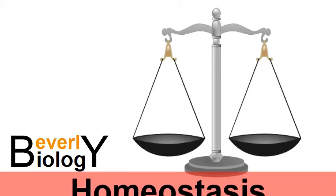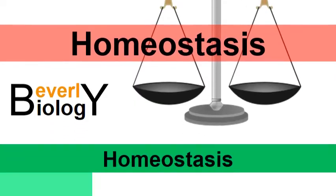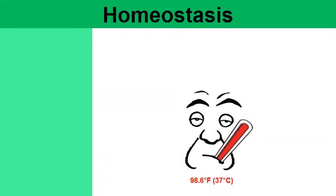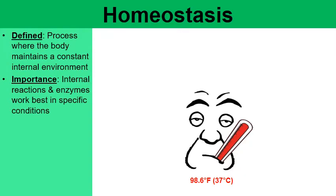The topic of this video is homeostasis and the body's ability to maintain an internal balance. Homeostasis is the process where the body maintains a constant internal environment. This is so important because the internal chemical reactions taking place to keep us alive depend upon enzymes to help perform these chemical reactions.